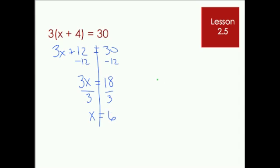Now we can take a moment to come over here and check it. That'll give us 3 times 6 plus 4 equals 30. 6 plus 4 is 10. So we have 3 times 10 equals 30. And that is correct. So we've checked it. We've done a good job.